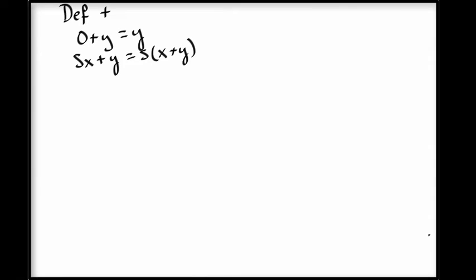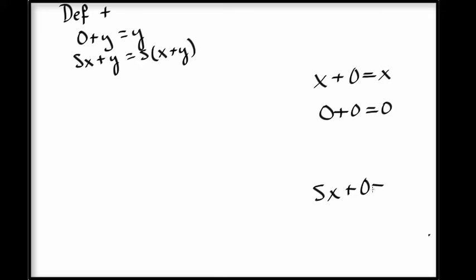The lemma we need says x plus 0 always equals x. We'll prove this by induction on x. That means we'll have two cases again: 0 plus 0 is 0, and successor of x plus 0 is successor of x. In this second case we have an inductive hypothesis which says x plus 0 equals x.